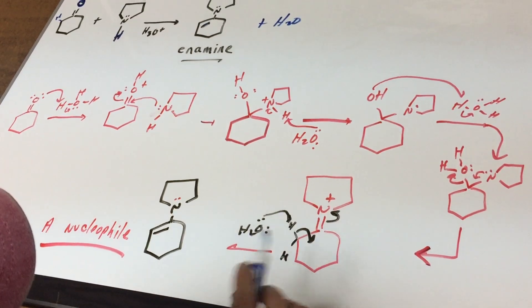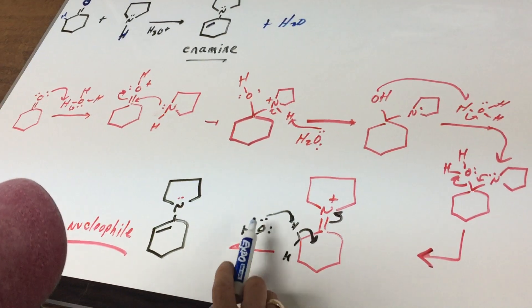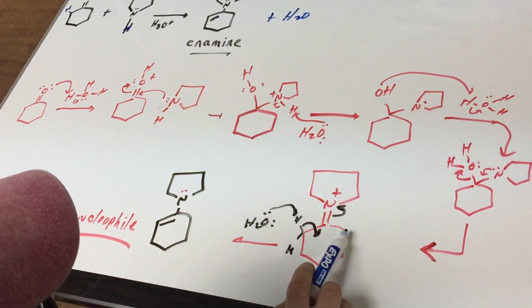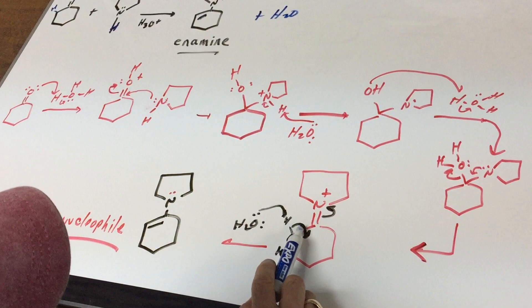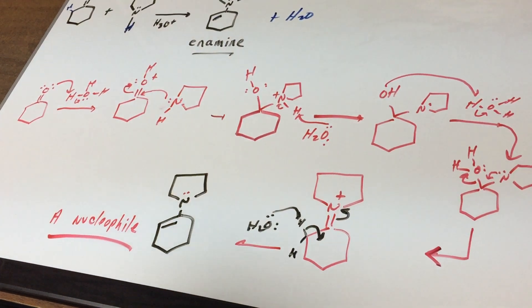Now watch what happens in the next step. We're going to do an elimination. I pull off the H, this bond moves in and this bond moves out, and you form the enamine.